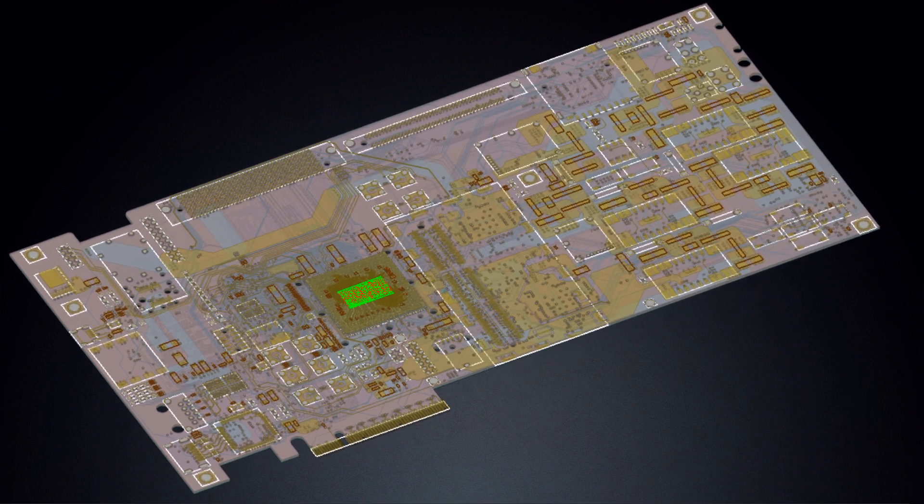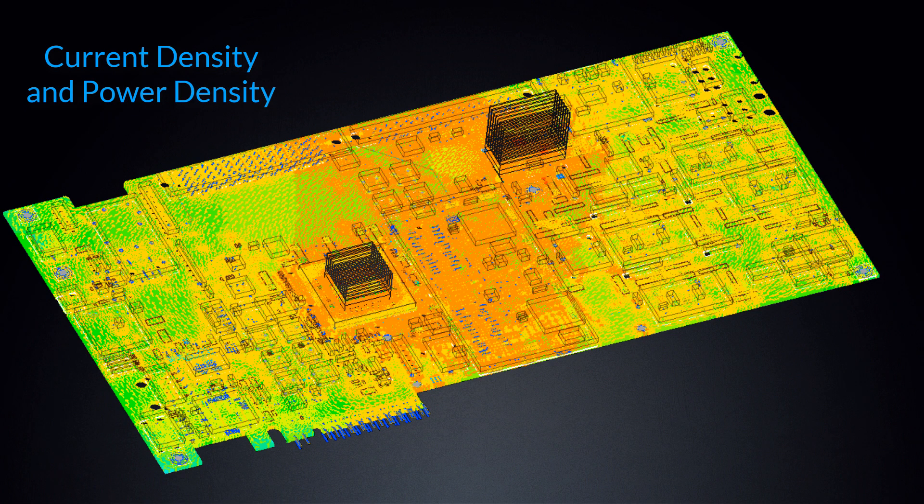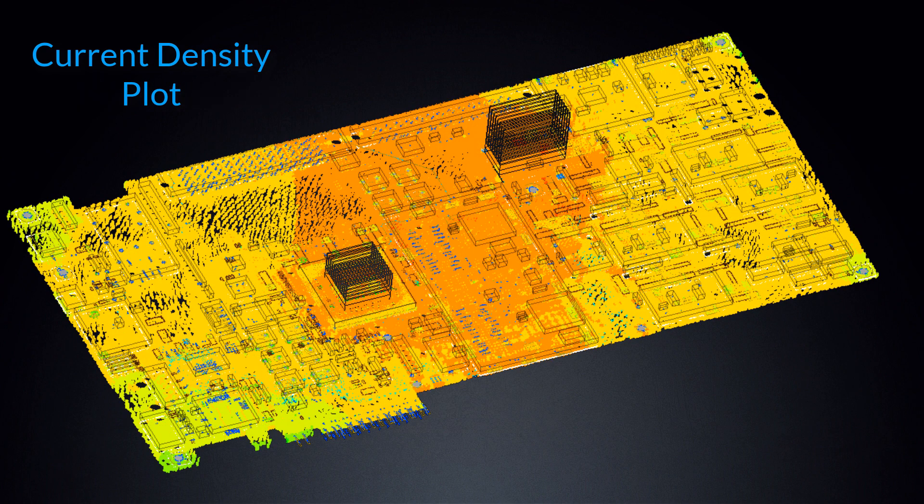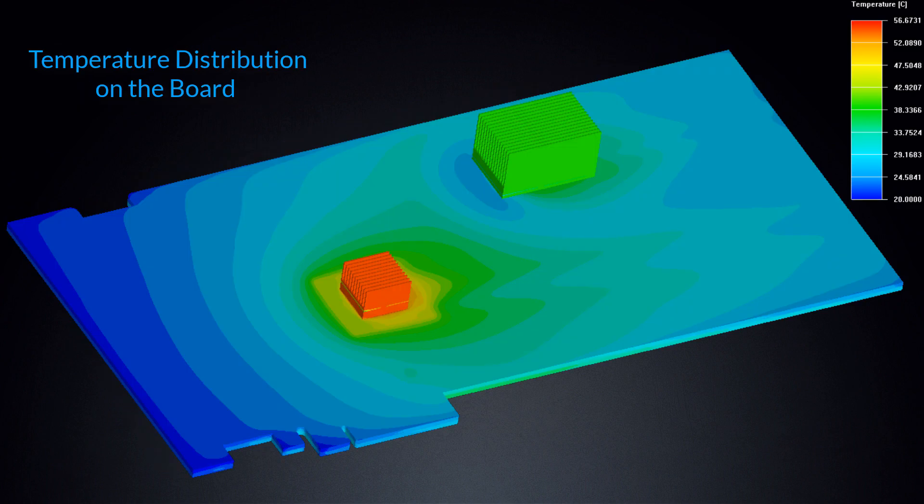This virtual prototype consists of an FPGA package mounted on a PCB. To account for current flow effects, a DCIR simulation is performed in SI-WAVE. The results show the current density in the design.